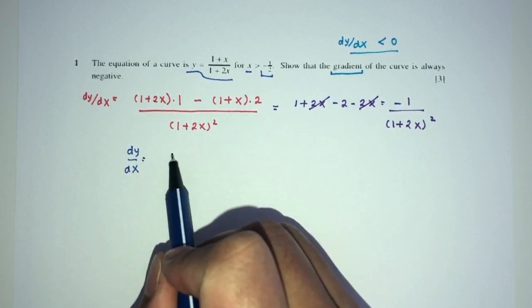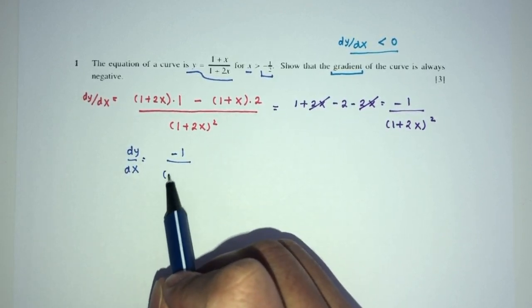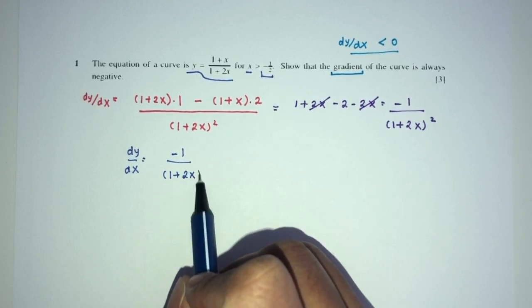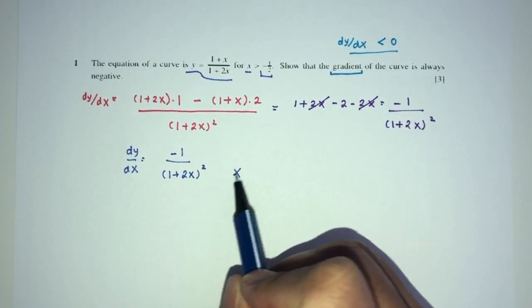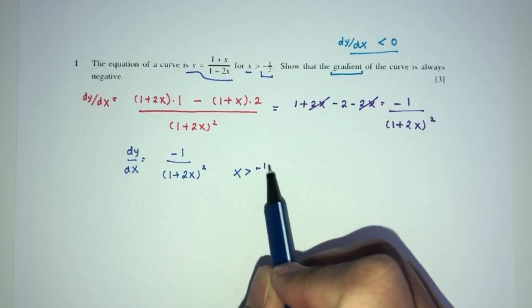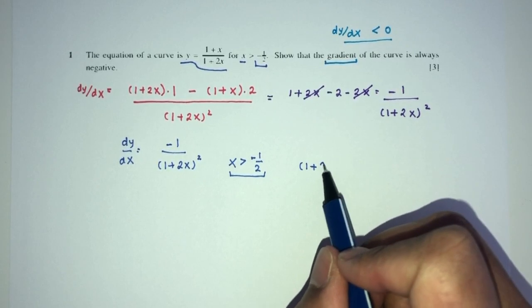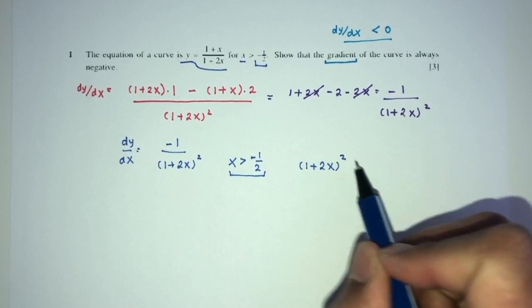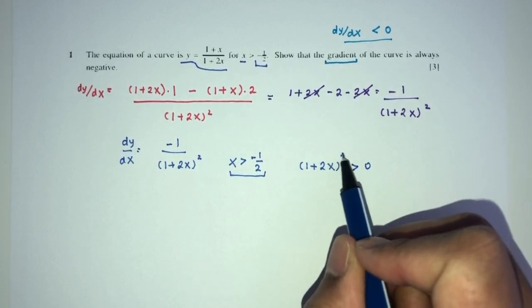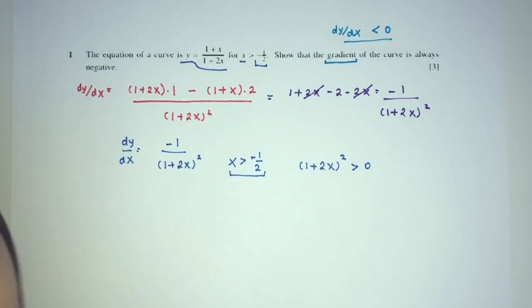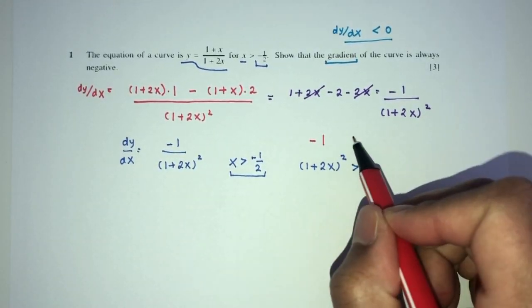it is derived to be minus 1 over the value of 1 plus 2x square. Now, for x to be more than minus half, you can see that this value would always be positive. Why? Because anything square will be positive, right?